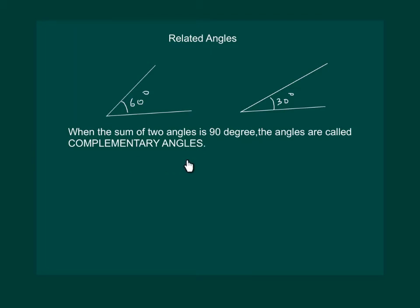Also, we can say that if two angles are complementary — that means if their sum is 90 degrees — then each angle is said to be the complement of the other angle. This one is a complement of that one, and vice versa.